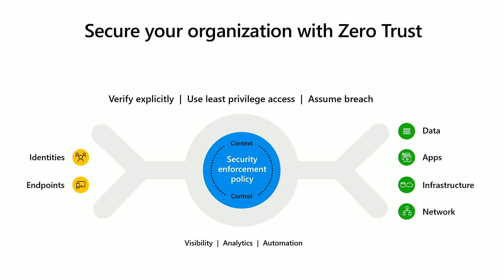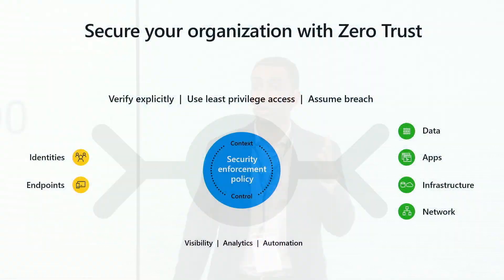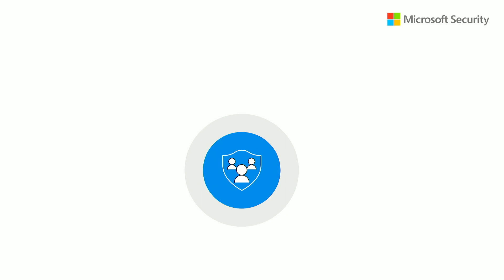Zero Trust is about having a unified security policy that provides visibility, analytics, and automation across all entities of your environment — for identities, endpoints, data, applications, network, and infrastructure. All of this depends on verifying explicitly every request that comes in and assuming you are under breach. No matter where the request originates from or where it is located, you always have to verify and never trust anyone.